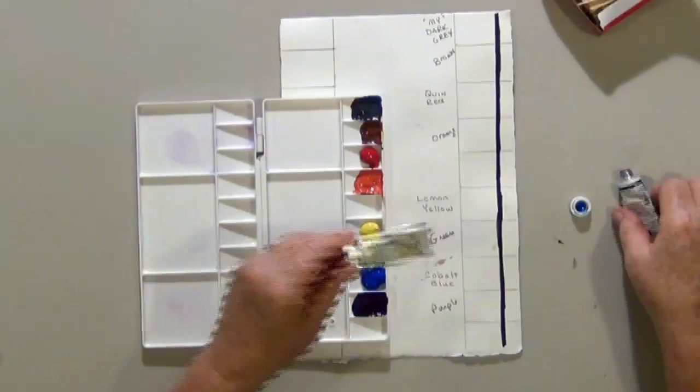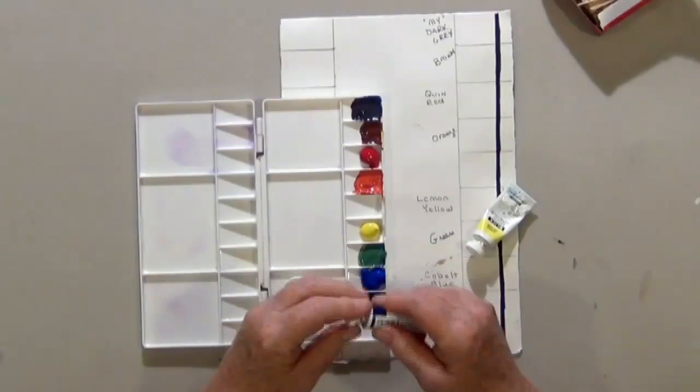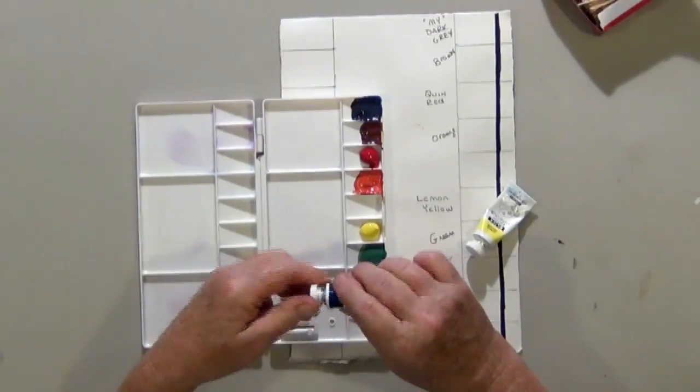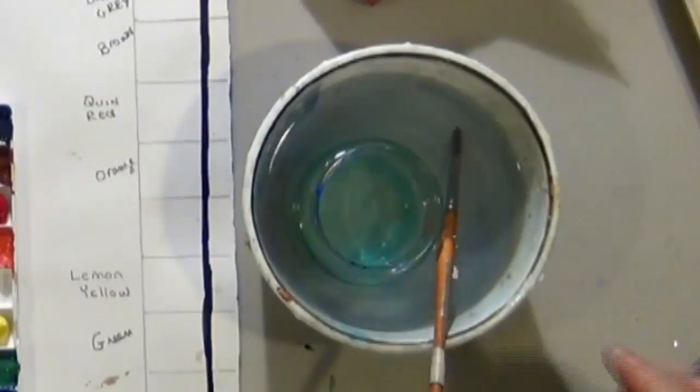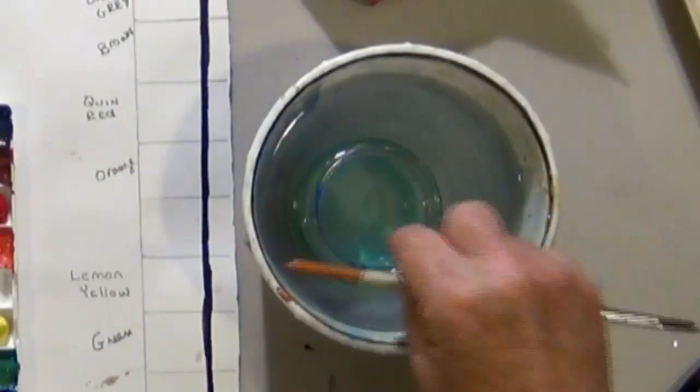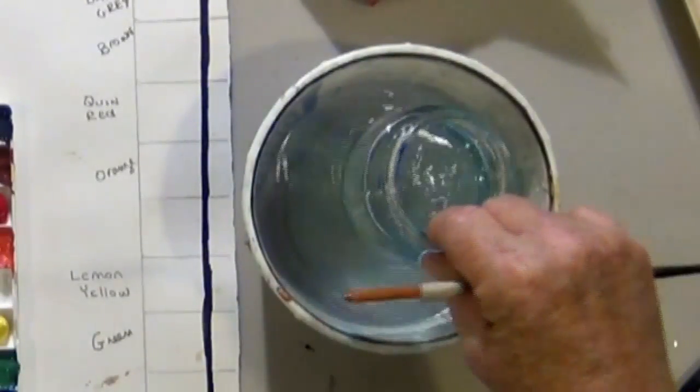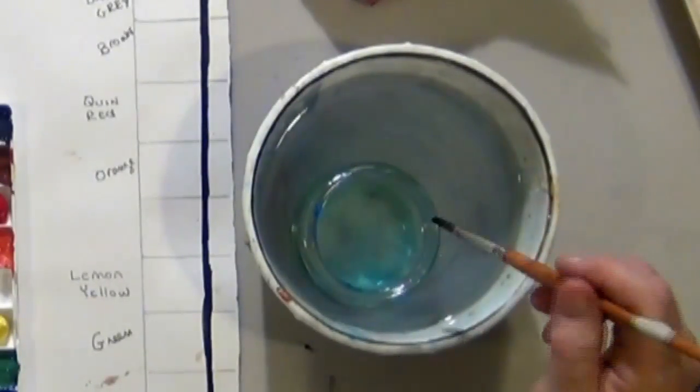If you ever have trouble getting the lids off of your paint, you can run them under hot water. And generally that will make them much easier to open. Now I have a plastic tub filled with water. And inside of it I have a little jar filled with water. That way I can have clean and dirty water.